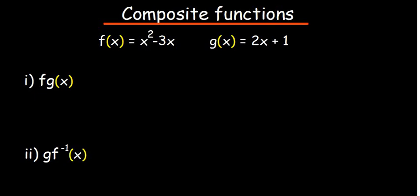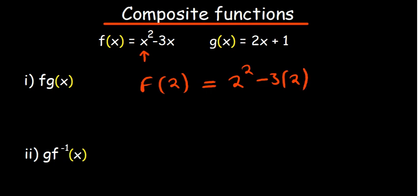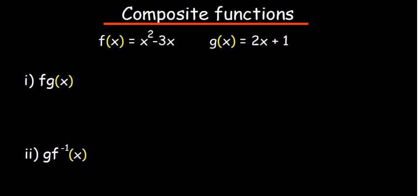In this video we're going to talk about composite functions. A composite function is a function of a function. So when we say f(2), that means at every point where you have x in f(x), you put a 2. So in that case it will be 2 squared minus 3 — wherever there is x, you put a 2. That's what it means.